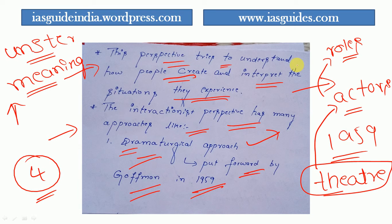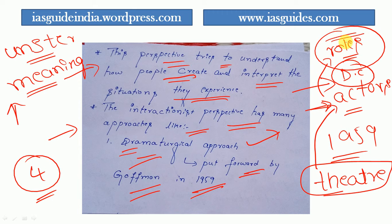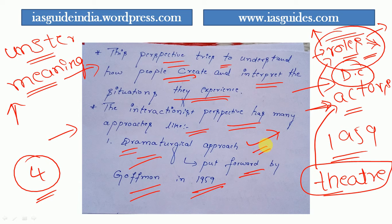For example, a civil servant considers himself an agent of bureaucracy and performs the role of, say, a District Collector. Through that role he manages his life and creates a certain impression on others through his dynamic behavior. Similarly, a film actor plays different roles. How an individual acts in society, how he manages himself, and how he creates an impression — this is image building — all are included in the dramaturgical approach.